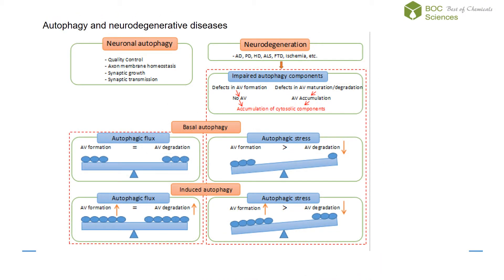A massive accumulation of autophagic vacuoles including autophagosomes or autolysosomes has been observed in the affected brain regions in several neurodegenerative disorders. However, the role of autophagy in each neurodegenerative disease has not been well defined. Accumulated autophagosomes in the degenerating neurons could be due to an increase or decrease in the autophagic flux.